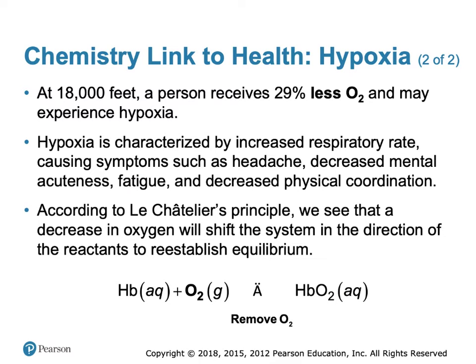At normal atmospheric pressure, you have a high partial pressure of oxygen in the lungs — that is why hemoglobin binds oxygen and forms oxyhemoglobin. In the tissue, you have a low partial pressure of oxygen, which is why oxyhemoglobin releases oxygen to the tissue. When a person climbs to high altitudes, they typically receive less oxygen because the partial pressure of oxygen is lower, meaning their tissue does not get enough oxygen and they undergo hypoxia.